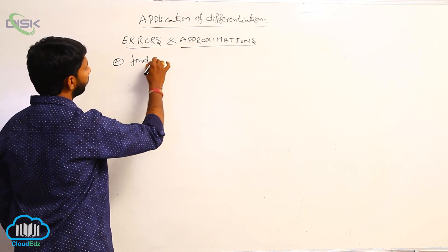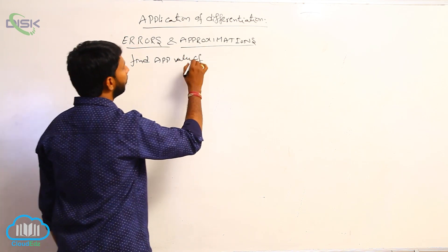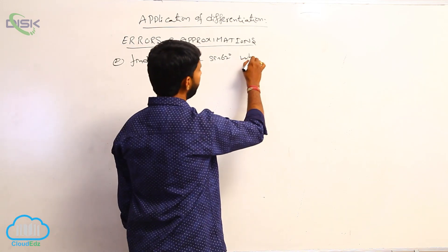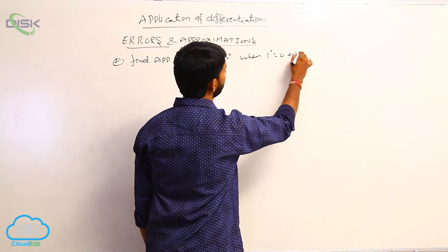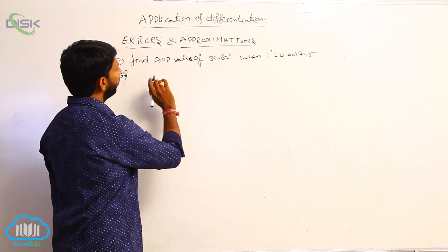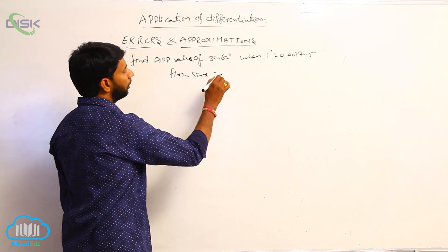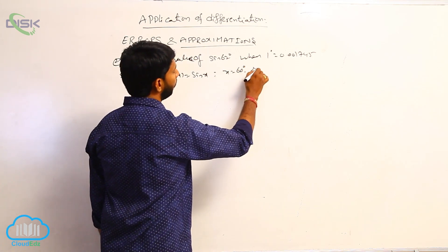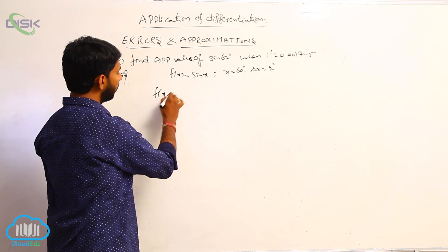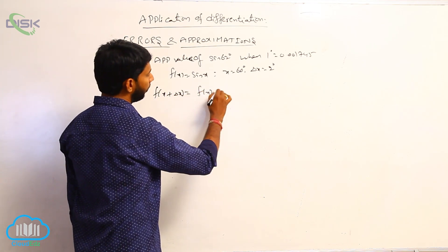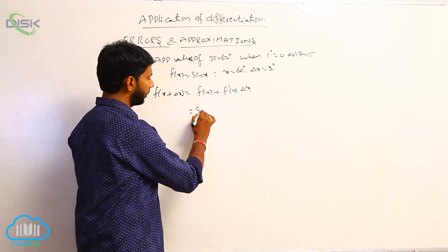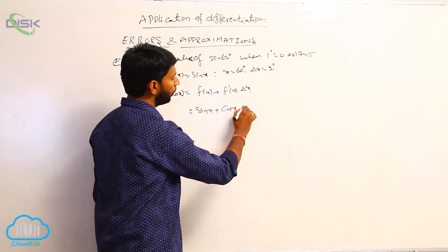Find the approximate value of sin 62°, when 1° = 0.001745. Let f(x) = sin x. The known value is x = 60°, and the unknown delta x = 2°. Using the approximate change formula: f(x + delta x) = f(x) + f'(x) · delta x = sin x + cos x · delta x.